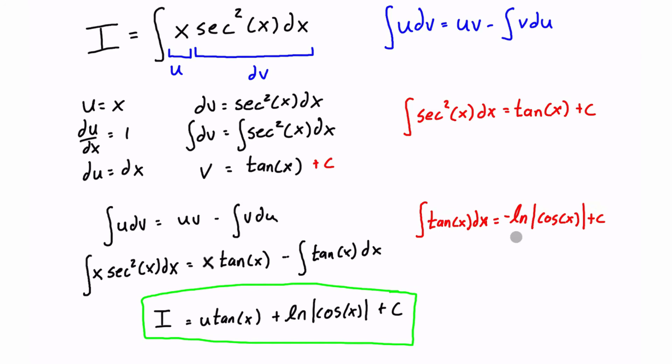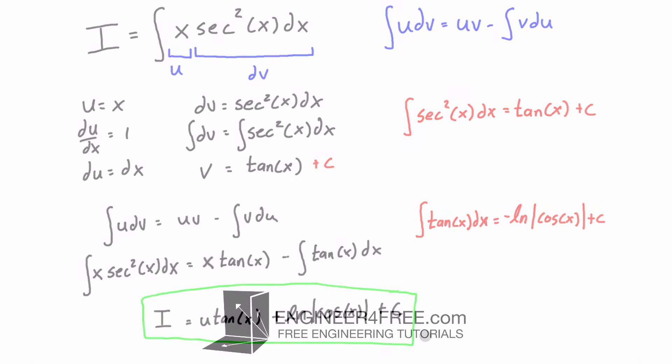So hopefully that helped. When you see an integral that looks like it can be split into two halves, one half that can be derived and one half that can be integrated, then integration by parts is a really good method to try. It's pretty simple to follow the steps and just plug in the values for u, dv, du, and v. So guys, thanks a lot for watching and I will see you in the next video.